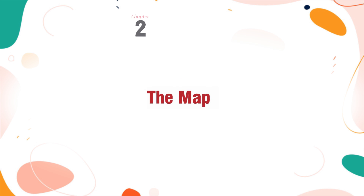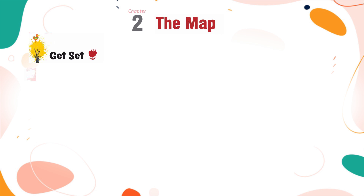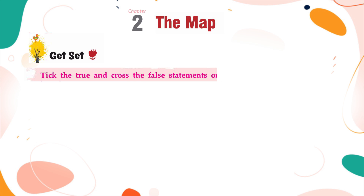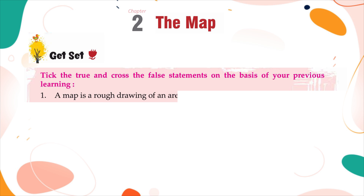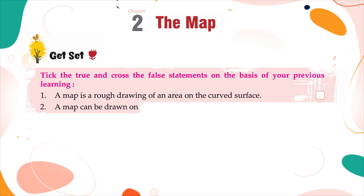Chapter 2: The Map. Get set — take the true and cross the false statements on the basis of your previous learning. A map is a rough drawing of an area on the curved surface. A map can be drawn on any flat surface.